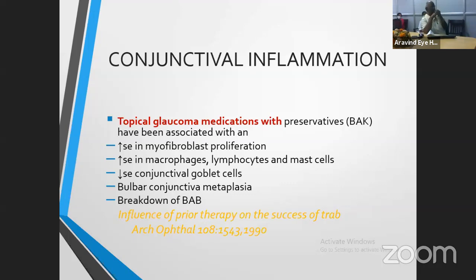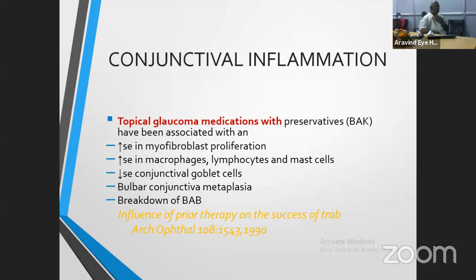Long-term anti-glaucoma medication use is associated with increased myofibroblast proliferation, increased macrophages, lymphocytes, and mast cell population. Goblet cell population, which is a good cell, is very much reduced. Also, bulbar conjunctival metaplasia. Another important thing is breakdown of the blood-aqueous barrier — especially when using prostaglandins long-term, this causes subclinical breakdown of the blood-aqueous barrier, leading to irritation and failure of filtration surgery.